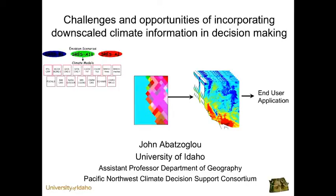Our ability to develop resiliency to climate and weather both today and going forward into the 21st century requires place-based information at scales that are usable and actionable for integrated modeling and decision-making. While most of my effort here today is really going to address data for climate change adaptation, it is important to take a step back and ask the more immediate question of applicability and needs of climate and weather information today.